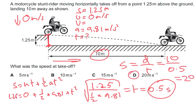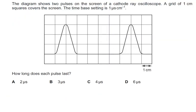The diagram shows two pulses on a cathode ray oscilloscope screen with one-centimetre squares and a time base of one microsecond per centimetre. Each pulse spans 2 squares, so each pulse lasts 2 microseconds.